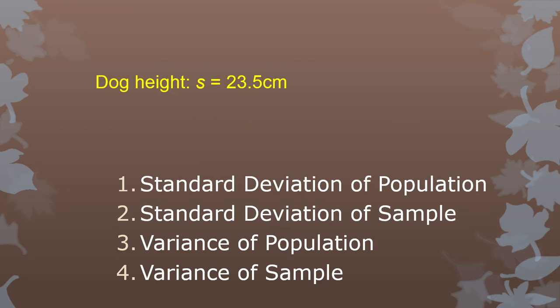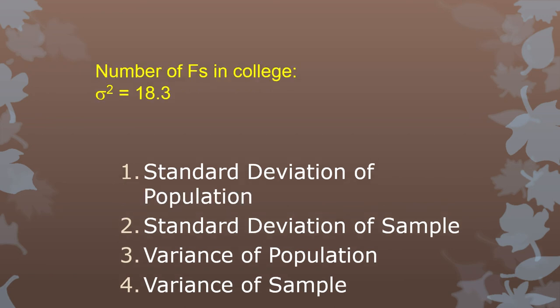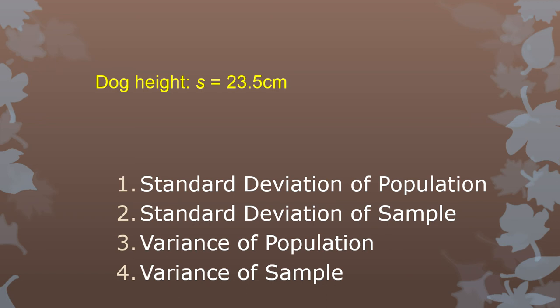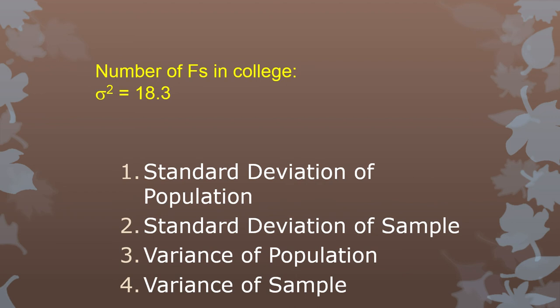Let's look at some terminology. Dog height: s equals 23.5 centimeters. It's not a Greek letter, so it's a sample value. It's not squared, so it's standard deviation — this is the standard deviation of a sample. Number of F's a person got in college: sigma squared equals 18.3. That is a population variance — it's a Greek letter so it's from the population, and it's squared so it's variance, not standard deviation.